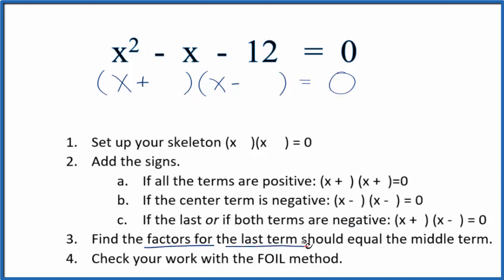Now we can find the factors for the last term, this -12. Those factors, if we add them together, should equal the middle term, this -1x. So for 12, we could have 12 times 1, 6 times 2,